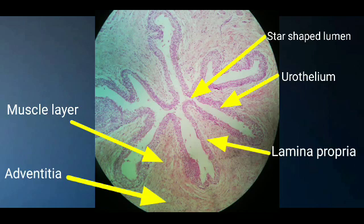This is an ordinary H&E stained ureter slide under low magnification. Here we can see the star-shaped lumen, the lining epithelium of the ureter, the lamina propria, the muscle layer, and the adventicia. Based on these features we can identify a histological slide of the ureter.